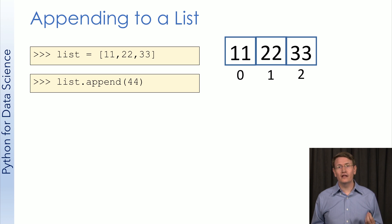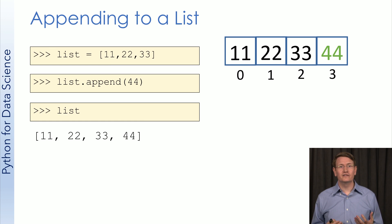Here, we'll append an element with a value of 44. Visually, this translates to adding the value of 44 at index 3. Let's check the contents of this list after we've used append, and we'll see that the element 44 was, in fact, added to the end.